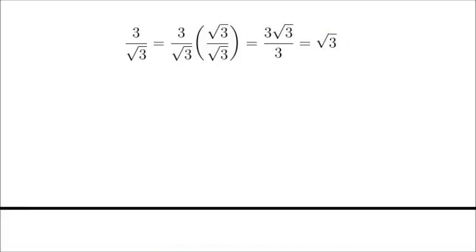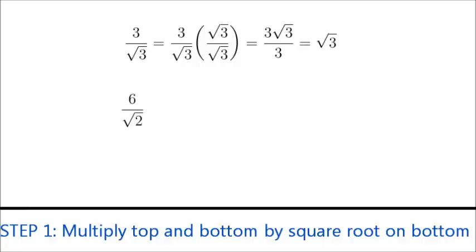Let's do another example. In this case, we have 6 over the square root of 2. Let's do the same thing we did before. We'll multiply top and bottom by the square root of 2.